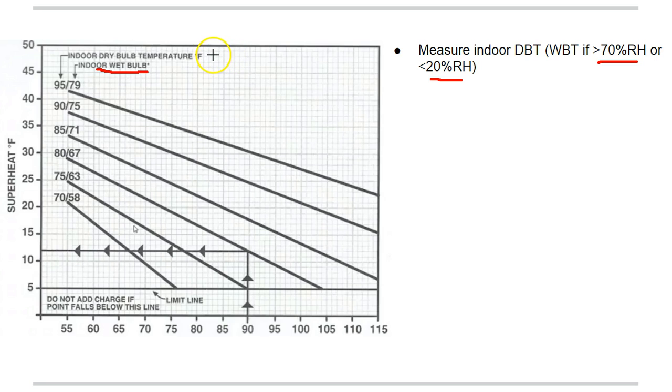We'll assume that we are within those ranges, so we're going to measure the indoor dry bulb temperature with our thermometer and we measure 80 degrees Fahrenheit. So you follow the line, the 80 degree indoor temperature line, down in this direction.